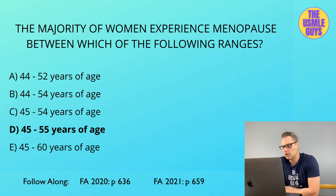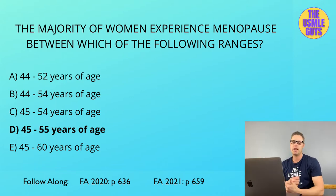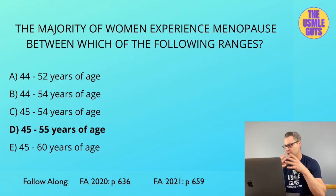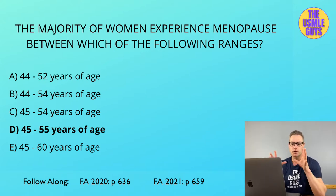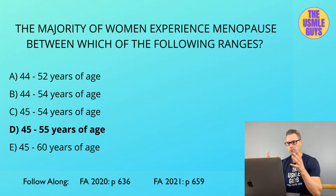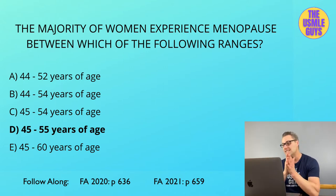The term perimenopause is used to indicate the transition stages of menopause. As estrogen levels drop, we get signals at the hypothalamus and pituitary that there's not enough estrogen. The signals that would otherwise boost estrogen production — GnRH, FSH, and LH — are going to go up. One of the keys to confirming menopause is an elevation of these values.